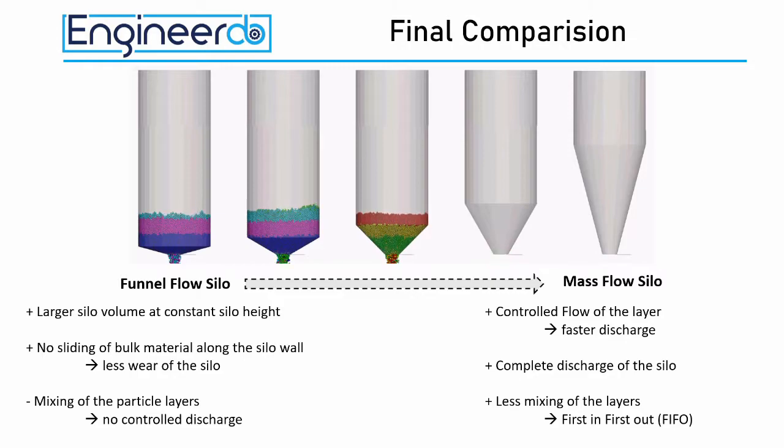If the material should be discharged without mixing to ensure a first in first out storage process, mass flow silos are preferred. The mass flow silos allow a controlled flow layer by layer. Furthermore, the risk of material remaining in the silo at the end of the discharge process is lower, due to the steep discharge funnel.